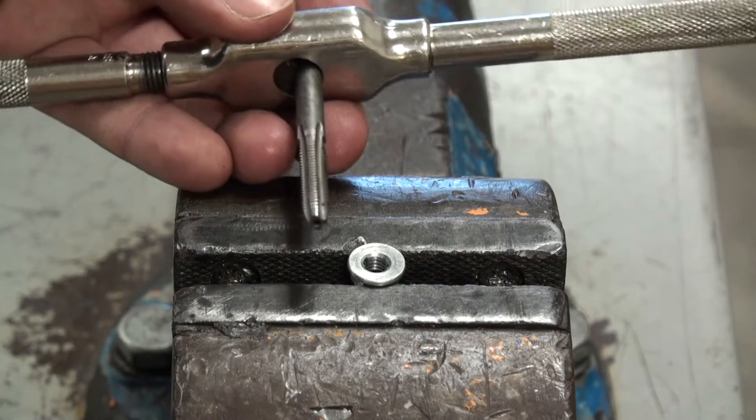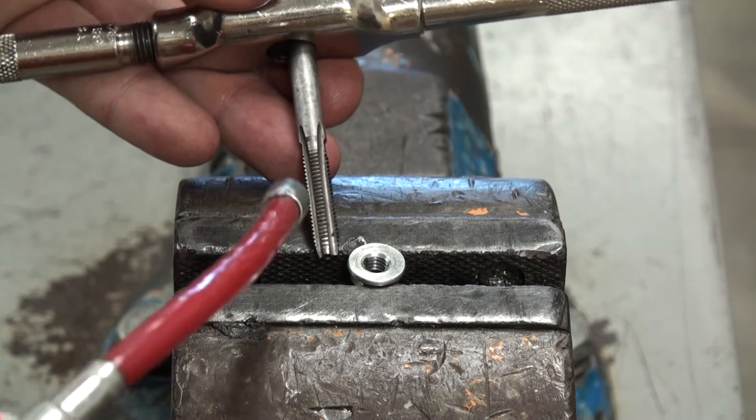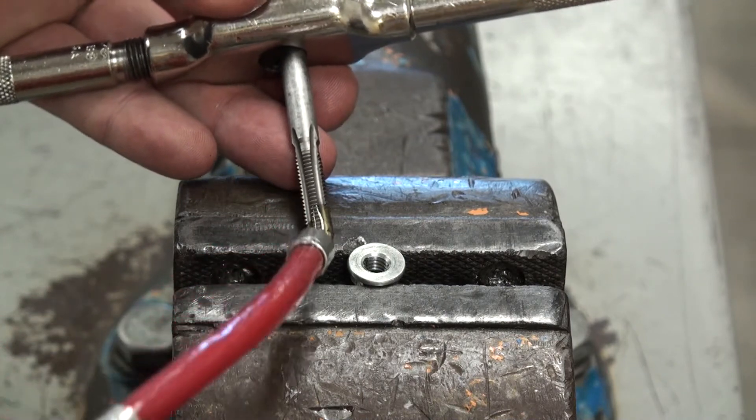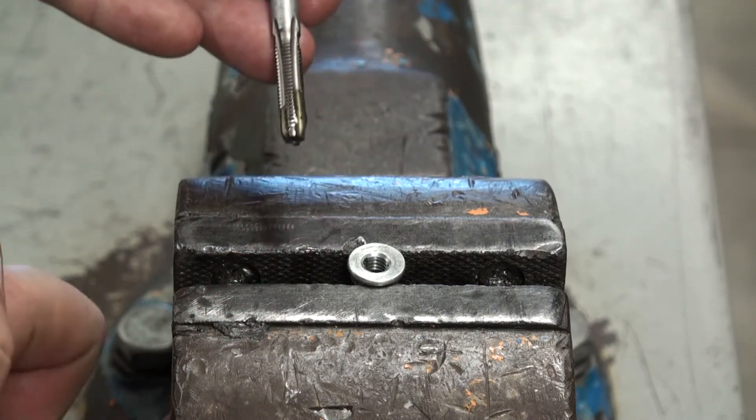Just like with the bolt, we're going to use a clamp to hold our work piece down and here I have my tap and tap handle. Again I'm going to apply just a little bit of oil to help the cutting process.